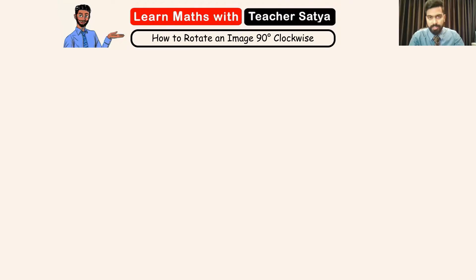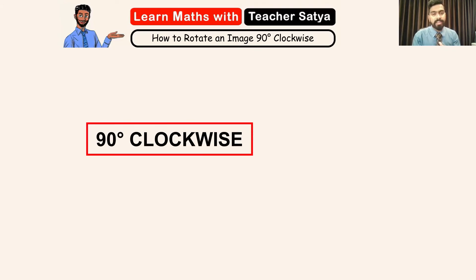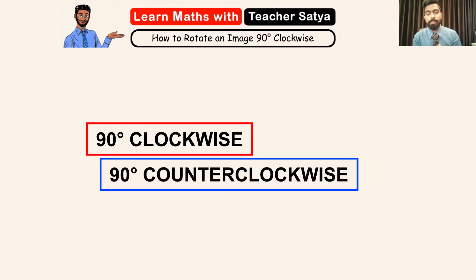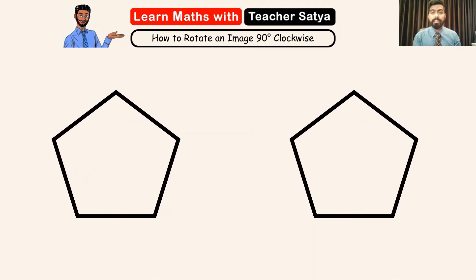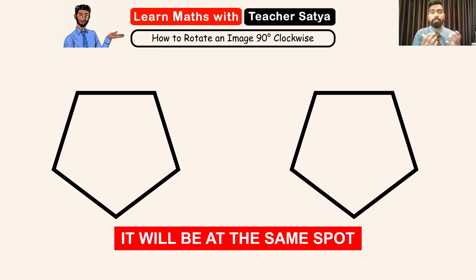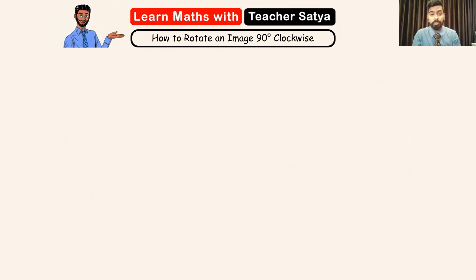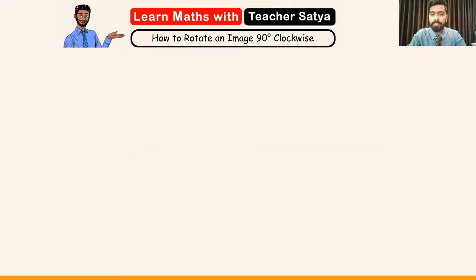When we talk about rotation there are mainly three sorts of rotation. We have 90 degree clockwise, 90 degree counterclockwise, and then a rotation of 180 degrees. Now 180 degrees, whether you go clockwise or counterclockwise, it will be at the same spot. In this video I'll be teaching you how to make a rotation of 90 degrees clockwise. Let's go ahead and solve some examples.